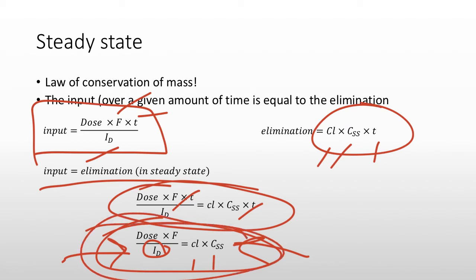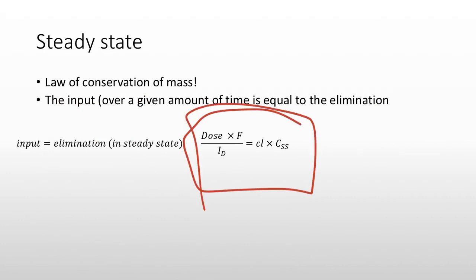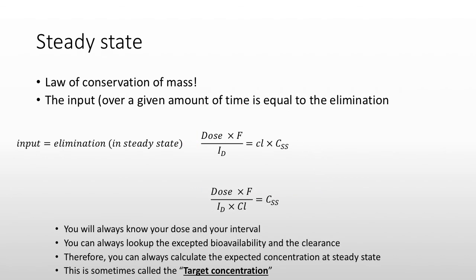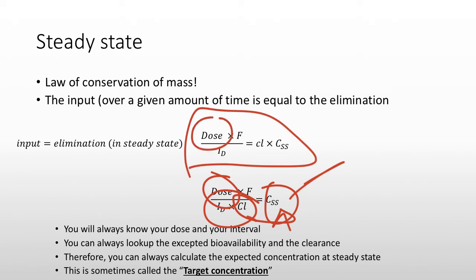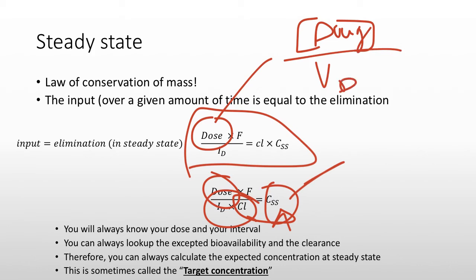This is the equation to memorize. If you need concentration steady state, divide clearance to the other side. If you want the dose to give a patient to reach a specific concentration, multiply by the dosing interval and clearance, then divide by the bioavailable fraction. Or you can solve for the dosing interval. You may also be given concentration and volume of distribution to back-calculate the dose.